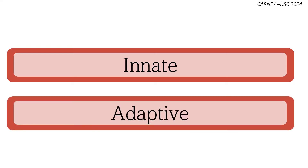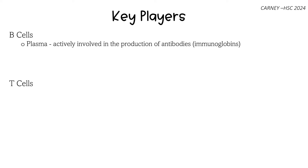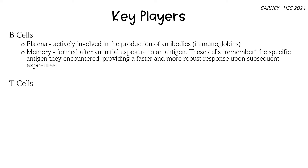Now let's look at the adaptive immune response. B cells and T cells, also called B and T lymphocytes, are types of white blood cells involved in the third line of defence. Both cell types form in the bone marrow; however, T cells mature in the thymus and B cells stay in the bone marrow to mature — hence their names. Plasma B cells are actively involved in the production of antibodies, or immunoglobulins — proteins that help to neutralise evading pathogens. Memory B cells form after the initial exposure to an antigen; they are specific remembering cells, so if the body encounters the same pathogen again, the immune response will be faster in producing antibodies to fight.